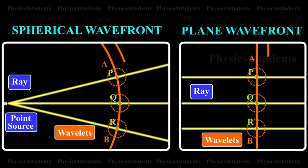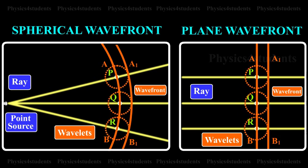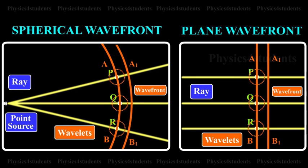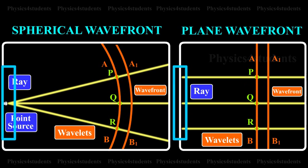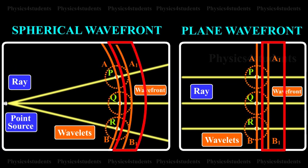The arc A1, B1 drawn as a forward envelope of the small circles is the new wavefront at that instant. If the source of light is at a large distance, we obtain a plane wavefront A1, B1 as shown in the animation.